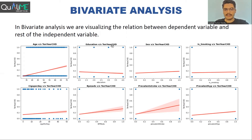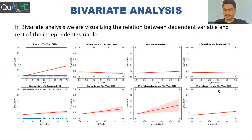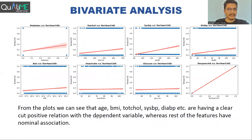Education and sex were also analyzed versus the target variable. For sex, zero represents female, so females are less prone to heart disease, while males have slightly higher chances. Smoking is also positively correlated, and if the number of cigarettes smoked increases, the risk of heart disease obviously increases. If patients have a history of BP medication or prevalent stroke, then the risk is higher. Similarly, prevalent hypertension is also positively related. If they have diabetes, the risk increases as well.